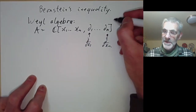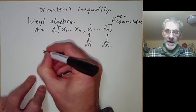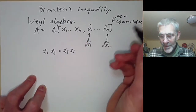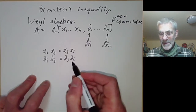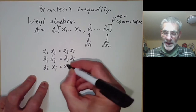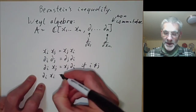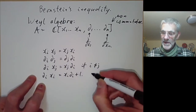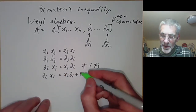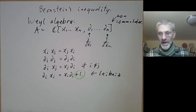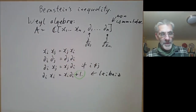You have to be a little bit careful here because this ring is non-commutative. It's pretty close to being commutative: xᵢxⱼ = xⱼxᵢ, partial differentiation commutes, and ∂ᵢxⱼ = xⱼ∂ᵢ if i ≠ j. However, ∂ᵢxᵢ = xᵢ∂ᵢ + 1 — this is the Leibniz rule. The only thing that stops it being commutative is that extra term of 1, but it's close enough that we can apply many techniques of commutative algebra.